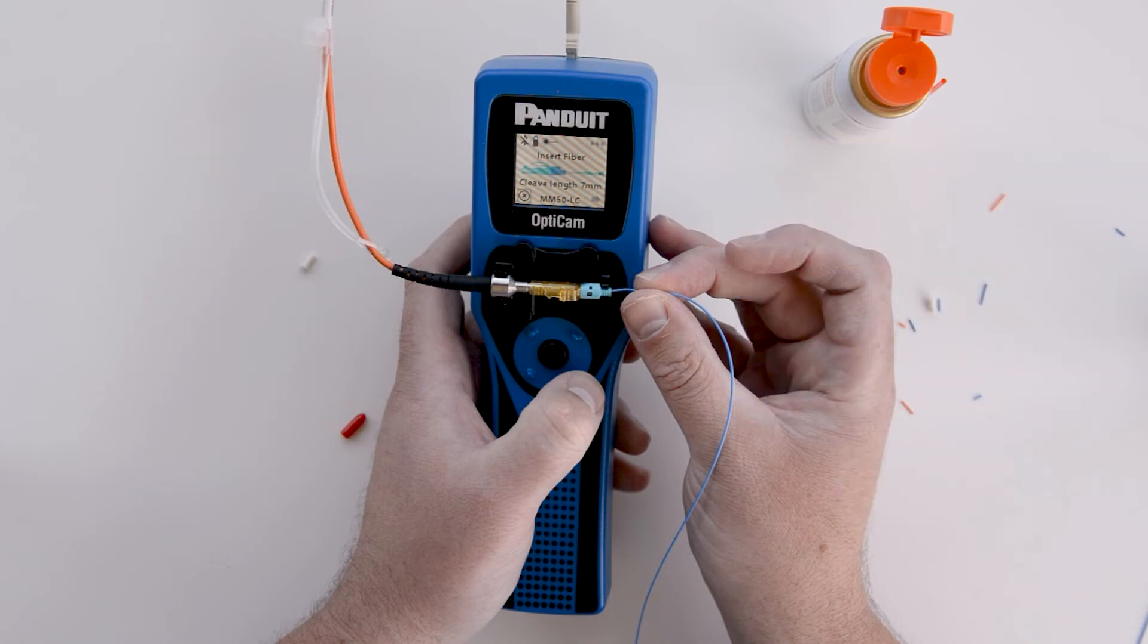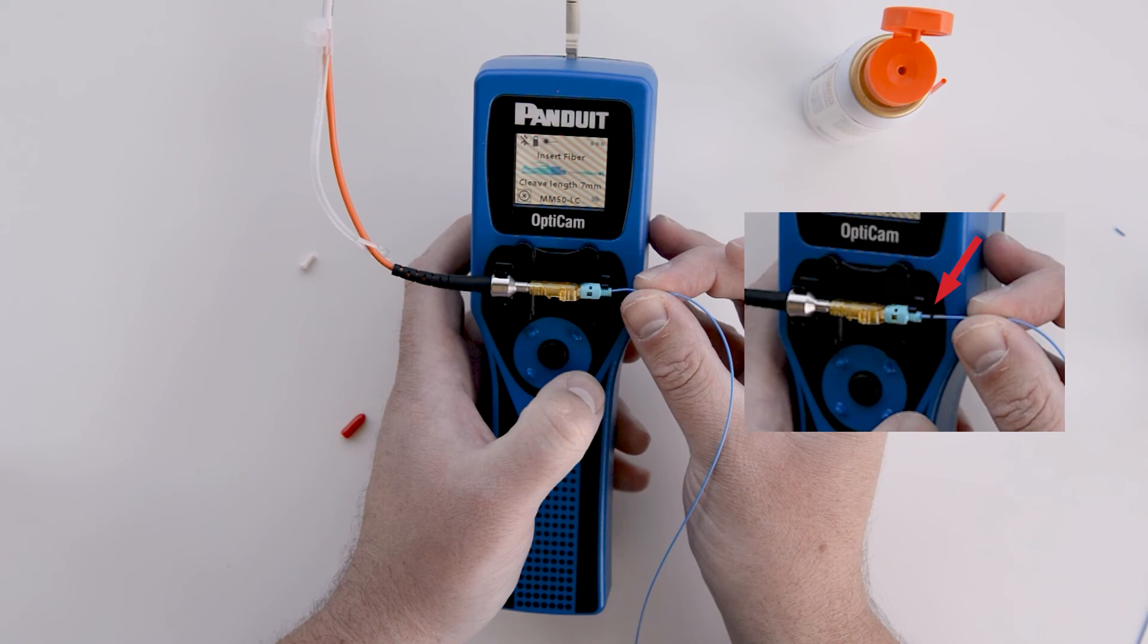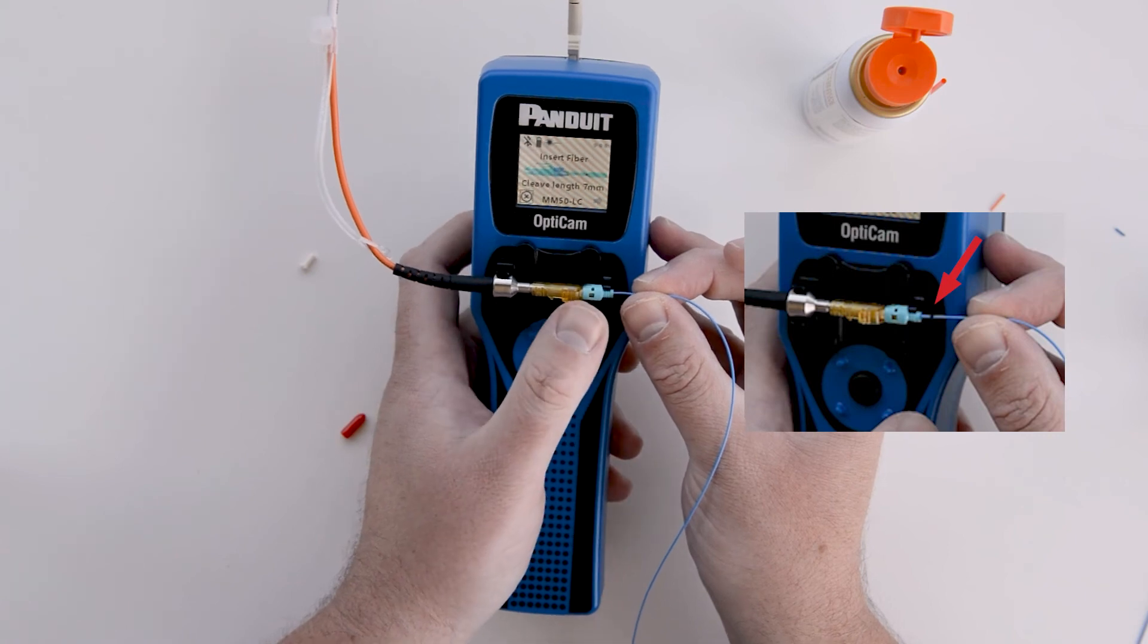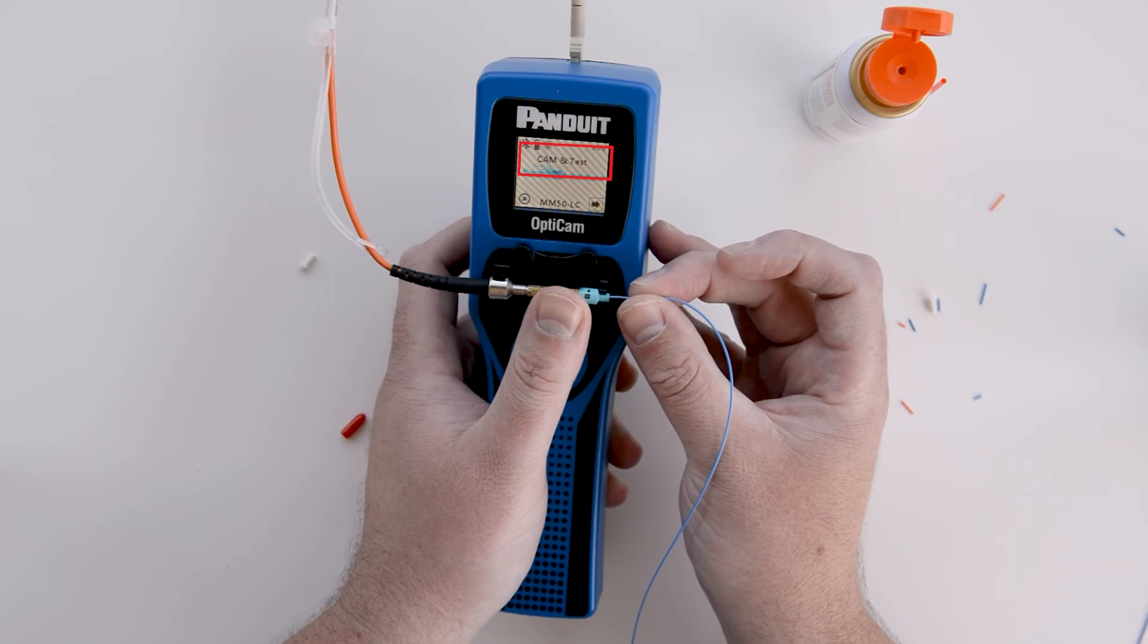Advance the fiber until it stops, indicating it is mated with the fiber inside the connector. The insertion mark on the buffer should line up with the back part of the connector and the screen should switch to a cam and test message.